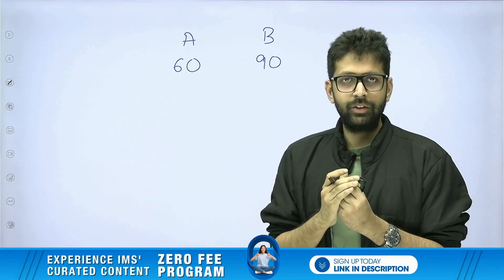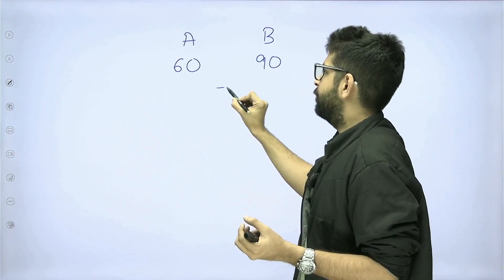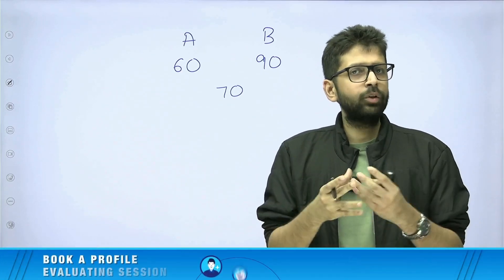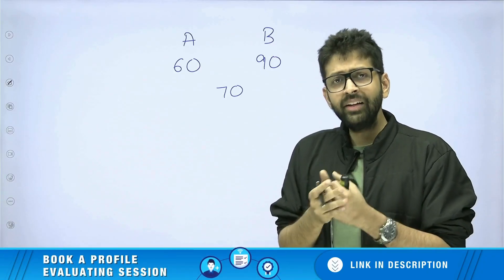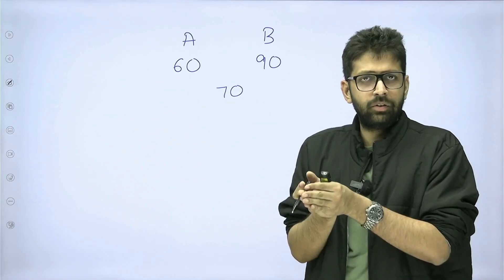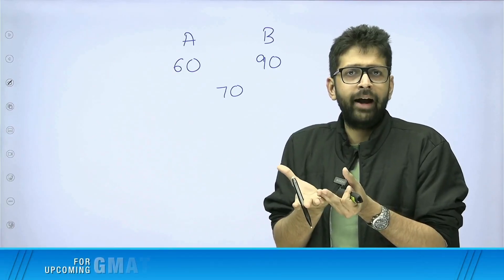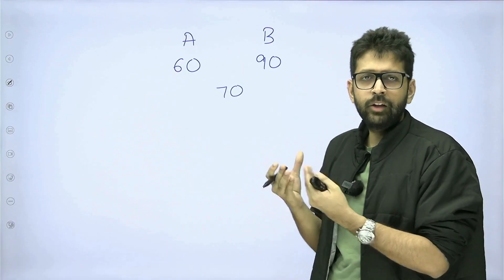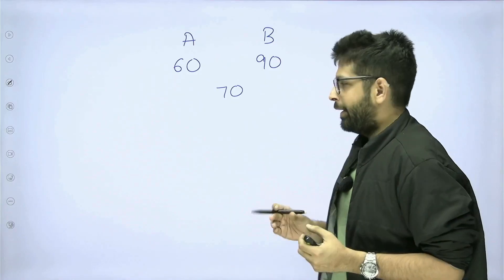It cannot be more than 90, it cannot be less than 60. Let's say the shopkeeper aims to get a price of 70 rupees per kg after mixing both these brands. The problem is the vendor is thinking: in what ratio should I mix both these brands? Should I take 1 kg of brand A and 10 kgs of brand B? That doubt is always going to be there in his mind, and that is where the concept of allegation would be helpful to the vendor.